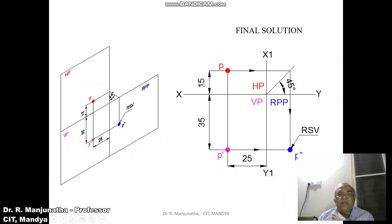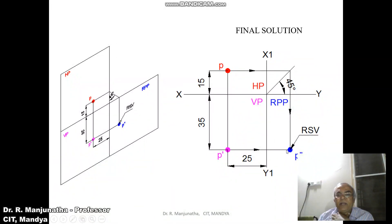Name that point as the right side view and give the directions of projections with dimensions. In the profile view, you can see the distance below HP and also the distance behind VP. This is how we write the final solution in the sketchbook.